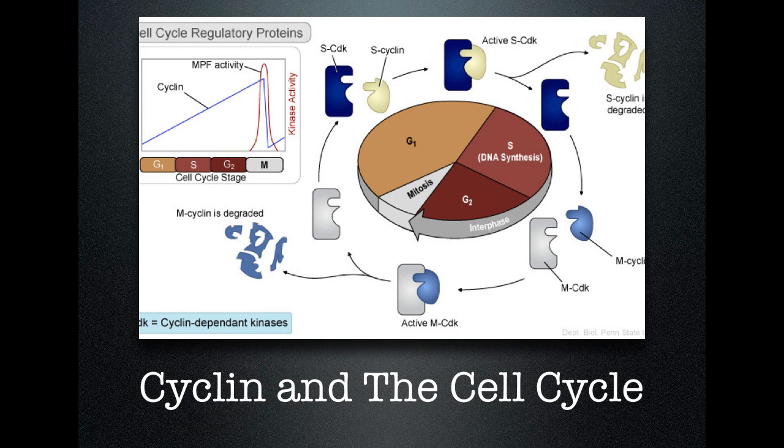Now, next thing that we're going to talk about is cyclin and the cell cycle. There are a lot of complex mechanisms that control whether a cell will actually divide or not. One of those things is cyclin. Cyclin is a protein that functions in the cell cycle. So, we've got a couple things. Let me note some things that we've got going on here.